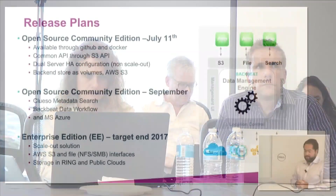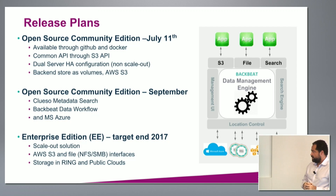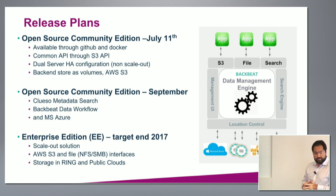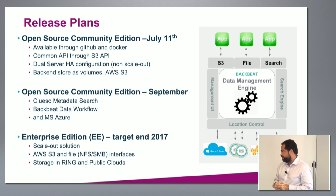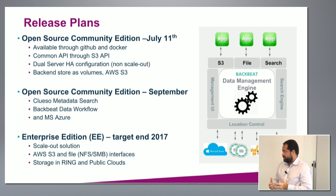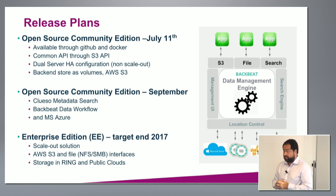We announced the Zenco open-source community edition on July 11th. It's available on GitHub with a few Docker containers and can be deployed in an HA solution. The backends supported today are local volumes and S3 itself — AWS is one of the backends. In September, we're releasing metadata search, Backbit integrated with Zenco, and Azure integration. End of this year we'll have an enterprise edition that is scaled out to handle more traffic, with file compatibility so you can mount Zenco via NFS and SMB and support the Ring as one of the backends.